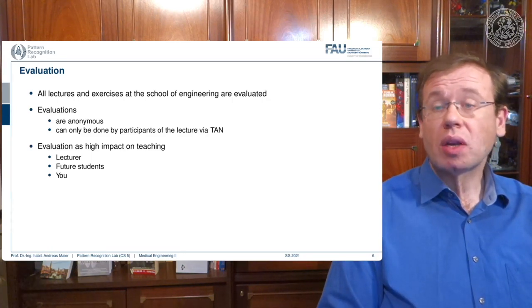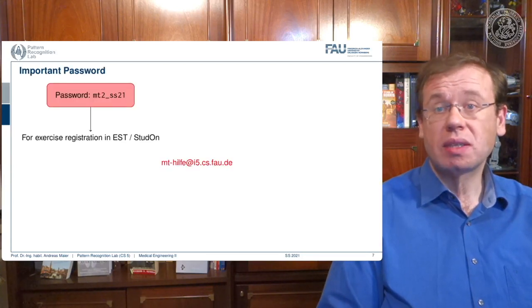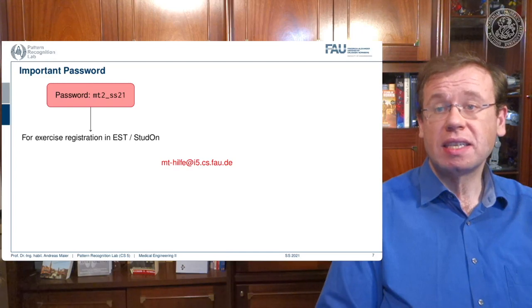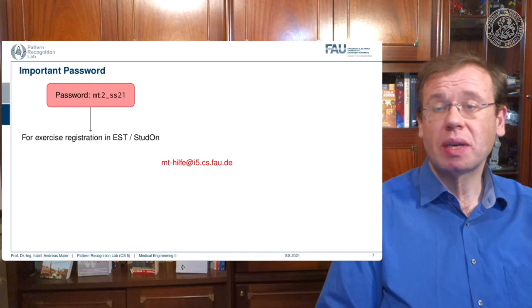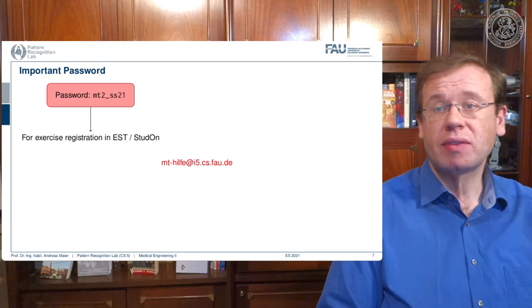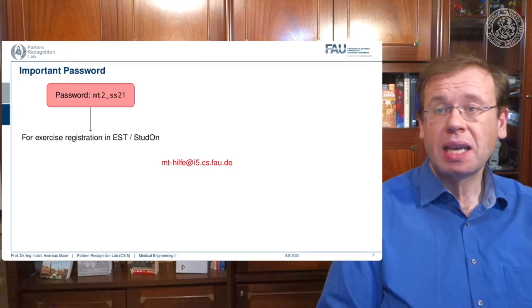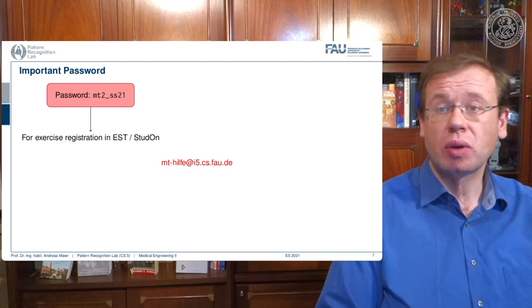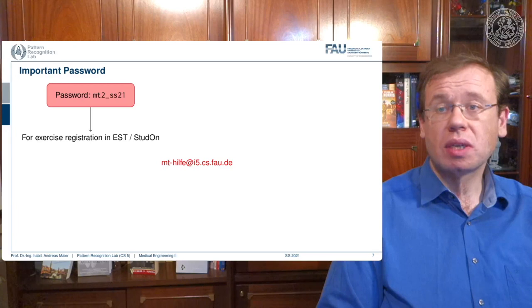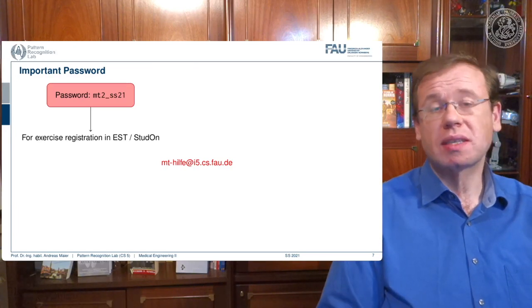There is a password you need to register for the class, done through StudOn. You need the password shown on the slides. If you have any trouble, there is help — send an email to mt-hilfe@i5.cs.fau.de. You can send requests in German — everybody among the students speaks German, so that's not a big deal.